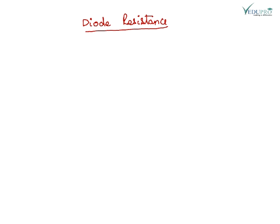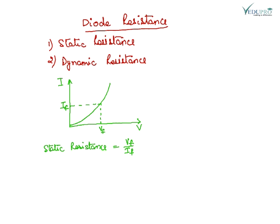There are two types of diode resistance: static resistance and dynamic resistance. Static resistance of a diode at any point is the ratio of the voltage at that point upon the corresponding current at the same point.